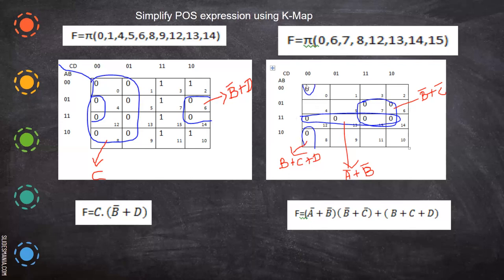When you form the pairs, it will look like this. For one group, A-bar and A cancel, and B-bar and B cancel, so everything eliminates — but wait, A cancels and you have B remaining, written as B since it's at zero. For another group taking C and D: D plus C plus D. When you take the large group, A-bar and B-bar remain, written with plus symbol. For another group, D-bar and D cancel, and you have C-bar. For the last group, A cancels and you have B-bar. So B-bar plus C-bar. The POS expression is: (A-bar + B-bar) · (B-bar + C) · (B + C + D).